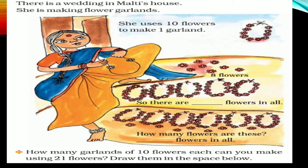There is a wedding in Malti's house. She is making flower garlands. She uses 10 flowers to make 1 garland. 1 garland is equal to 10 flowers. So 1 garland represents a 10. Now, let's see — she has 2 sets of garlands and some loose flowers. Let's count the first set. How many garlands? 1, 2, 3, 4, 5. 5 garlands means 50.